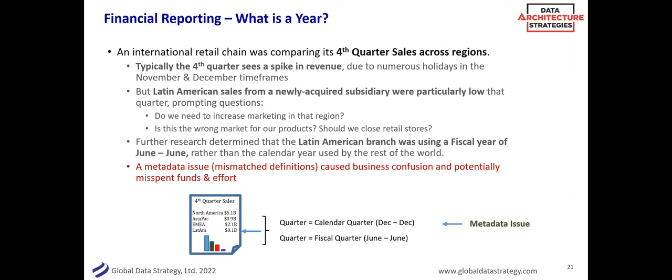A more real-world example: financial reporting. What is a year? An international retail chain was trying to do data-driven analysis on sales across regions. Typically in the fourth quarter they see a spike in revenue — November, December, the holiday season. But they had a Latin American subsidiary that showed a dip in that quarter, so they started thinking about doing more marketing or closing some stores. Research revealed that branch was using the fiscal year June-to-June rather than the calendar year used by the rest of the company. It was a metadata issue that caused confusion and could have led to the wrong business decision — all from something as simple as what do we mean by a year.